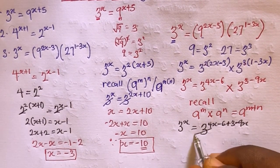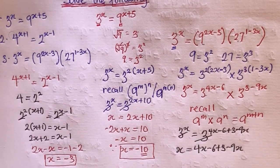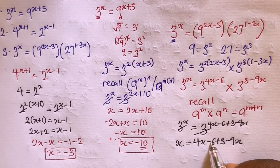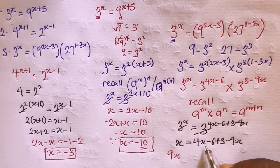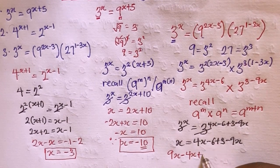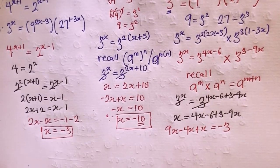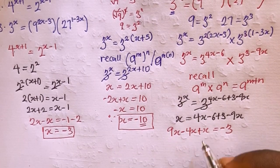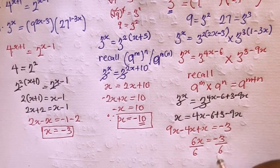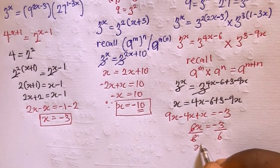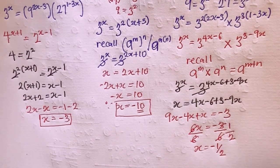Equating the exponents: x equals 4x minus 6 plus 3 minus 9x. Collecting like terms, bringing all x's to one side: 9x minus 4x plus x equals minus 6 plus 3, giving 6x equals minus 3. Dividing both sides by 6: x equals minus 1 over 2, since 3 divides into 3 once and into 6 twice.